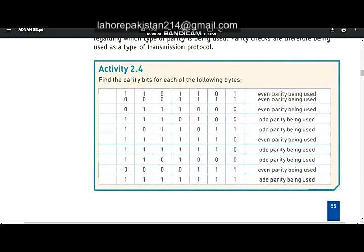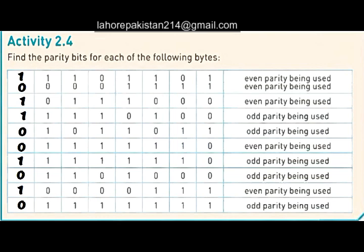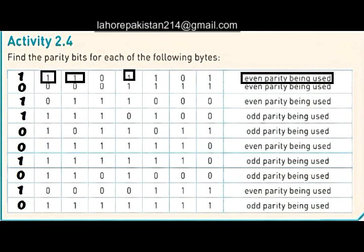Today I am going to solve Activity 2.4, in which you are supposed to find the parity bits of every byte. As you know, parity bits are decided between the sender and receiver at the time of data transmission. From the first byte, it should have an even number of ones. Counting: one, two, three, four, five — five is odd, so to make it even we need to add one, making a total of six.